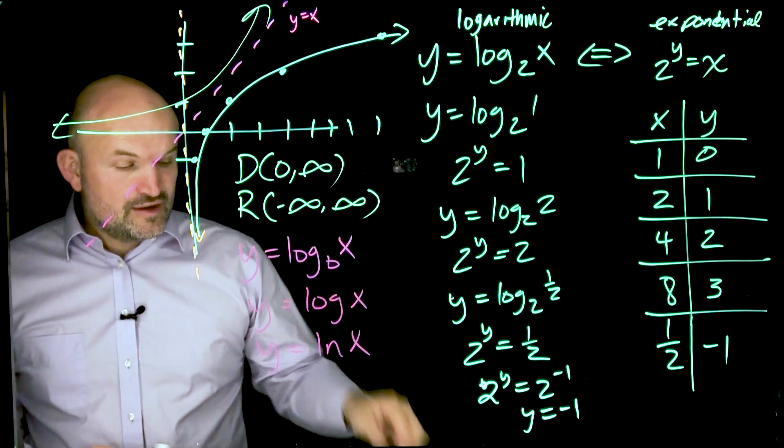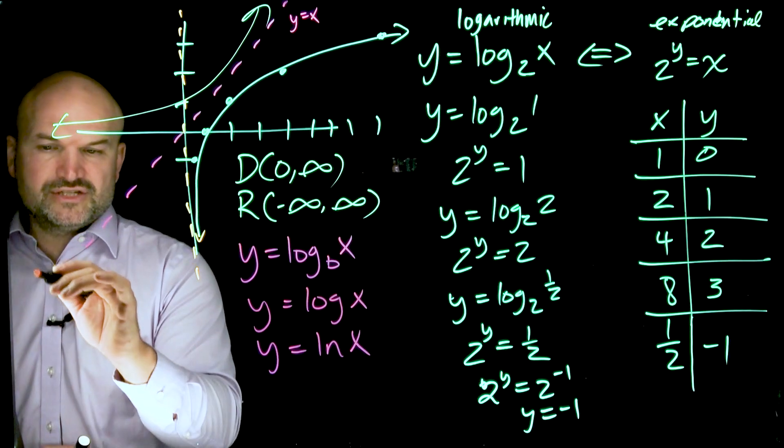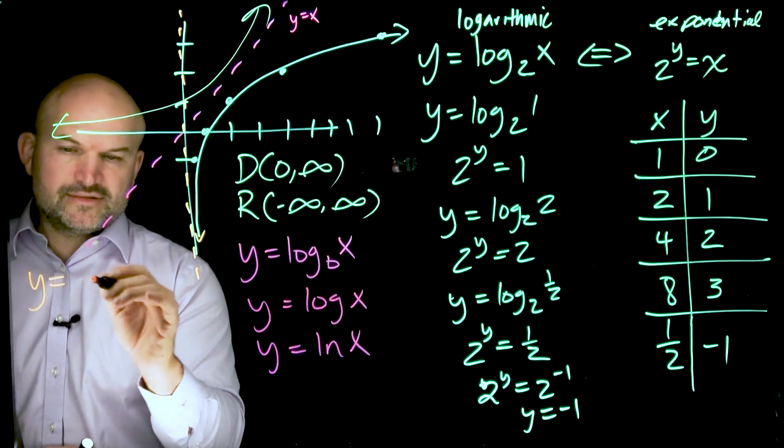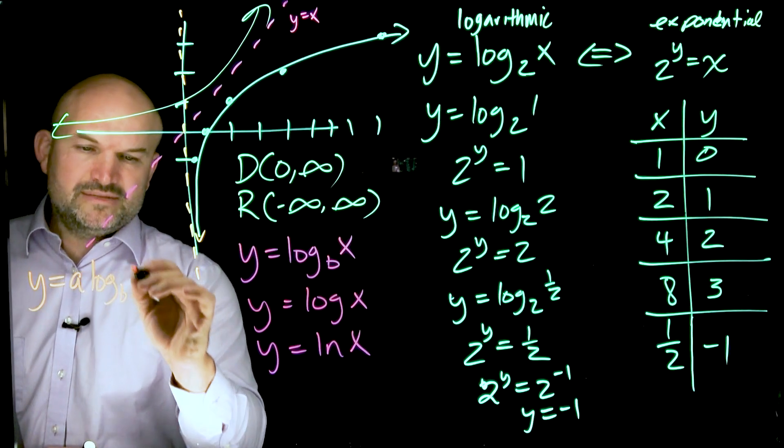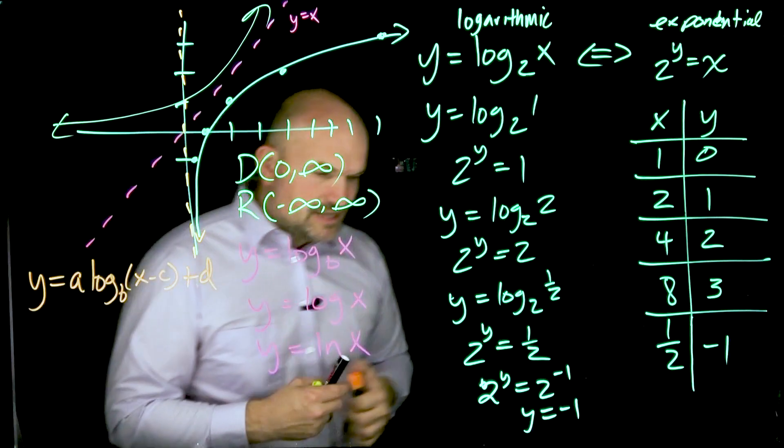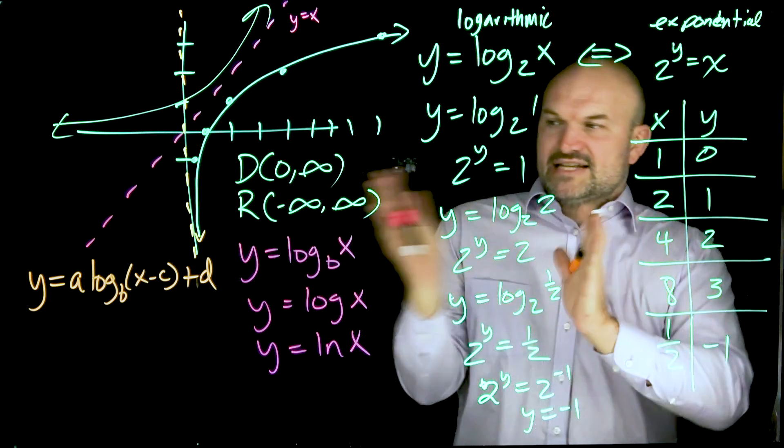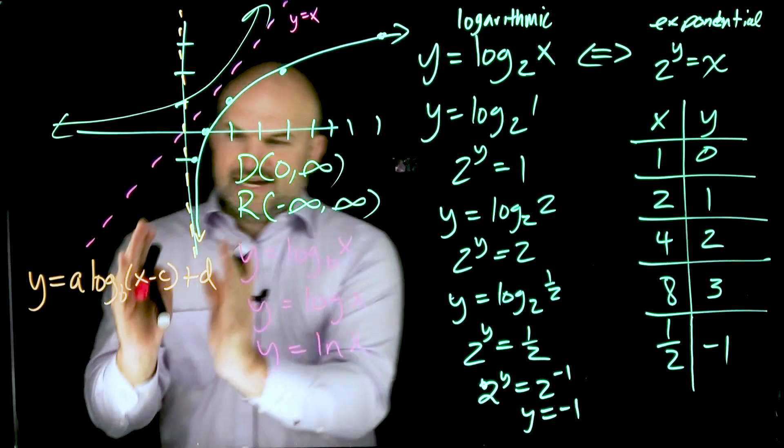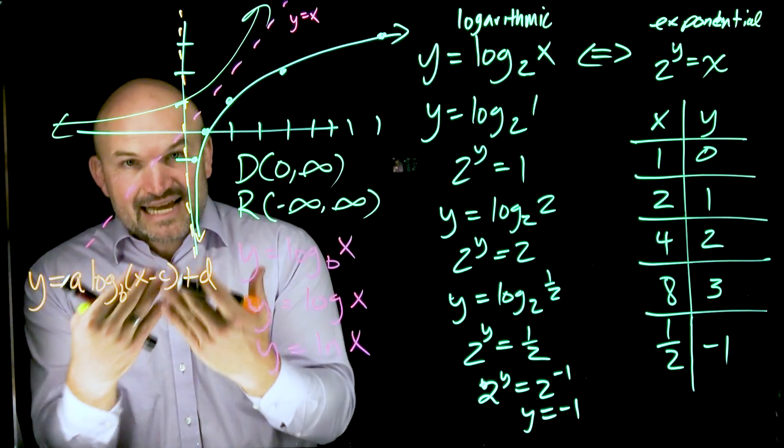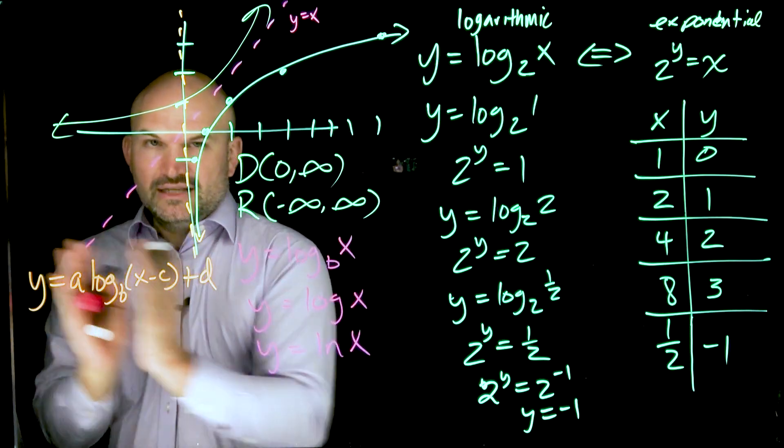However, there are some transformations that we can apply with logarithmic functions. Some of those operations or transformations would be A log base B of x minus C plus D. Remember when I talked about the x minus C was inside of the exponent or inside of the power of the exponential function? That's why I was shifting it left and right. Look at where the x minus C is on the logarithm. It's inside the argument of the logarithm. That's how we know that is going to be your shifting left or right.